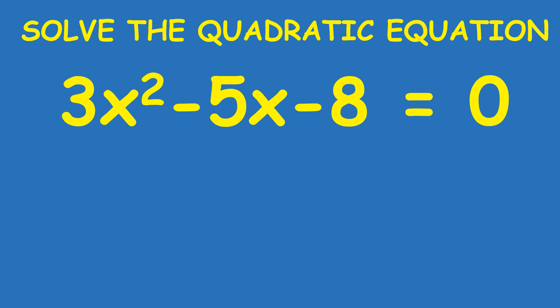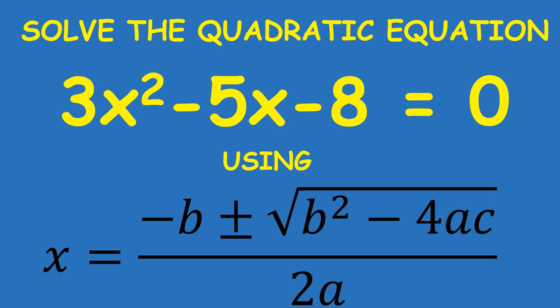Today we'll be solving this particular quadratic equation: 3x squared minus 5x minus 8 equals 0.